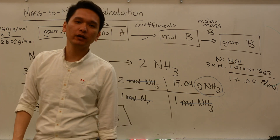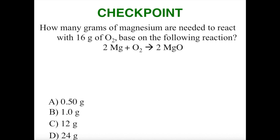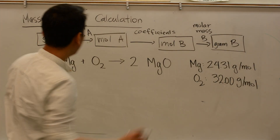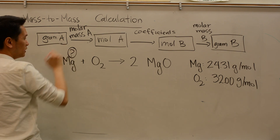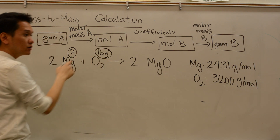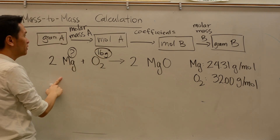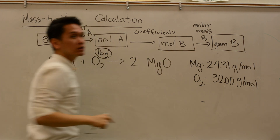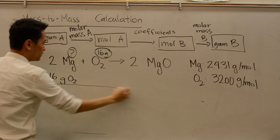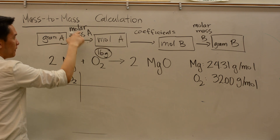Let's do some questions to check your understanding. The first checkpoint question asks: how many grams of magnesium are needed to react with 16 grams of oxygen gas, based on the following reaction? We are asked for grams of magnesium given 16 grams of oxygen — grams to grams — so we automatically apply the mantra: grams to moles to moles to grams. We start out with 16 grams of oxygen.